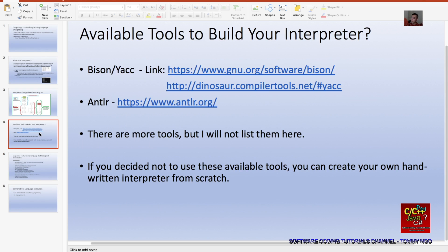So what are the available tools to build an interpreter? You can go through these links here. There's Bison and Yacc. These are pretty old, probably about 30 years or more. Then you have ANTLR. This is pretty new, written by I think Terence Parr, a professor in University of California, San Francisco, I believe.